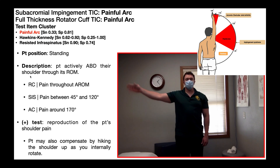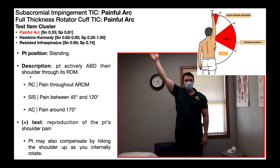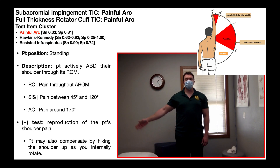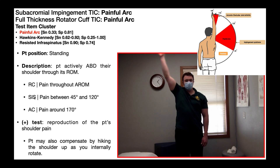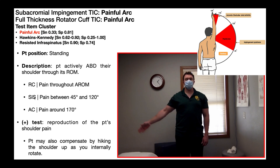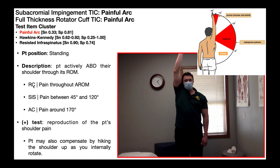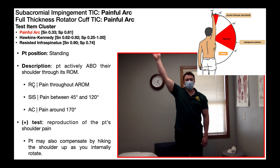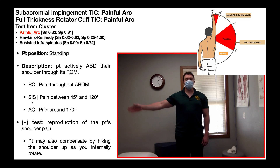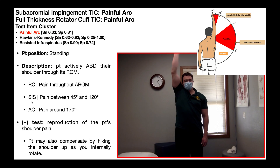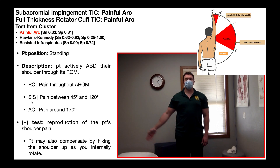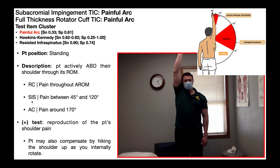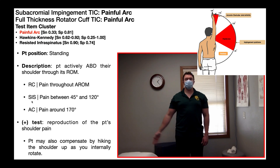If somebody has a rotator cuff tear, the pain would not just be between 45 and 120 degrees — it would also be painful from 0 to 45 degrees, meaning pain occurs throughout the entire active range of motion of abduction. It might be worse in some areas than others, but the whole movement generally will be painful. If somebody has true impingement syndrome, they probably will not have pain between 0 and 45 degrees — the pain will begin at 45 degrees and continue upward. So it's that first 30 to 45 degrees of abduction that helps you differentiate between a rotator cuff tear and impingement syndrome.